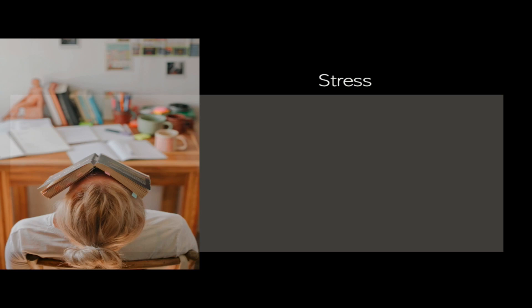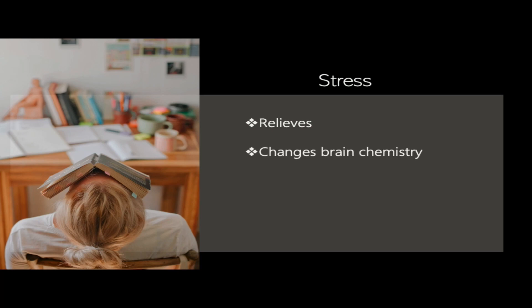Exercise is also wonderful for the mind. For stress, exercise relieves tension in the muscles that causes anxiety — simple stretches or going for a walk help you feel more relaxed. Exercise also changes the chemistry of your brain: by getting your heart rate up, you increase your body's levels of serotonin, the hormone responsible for stabilizing mood and happiness. And exercise shifts your focus, taking your mind off stressors. Try going for a walk or riding your bike — get active and see the difference.